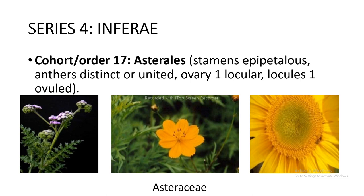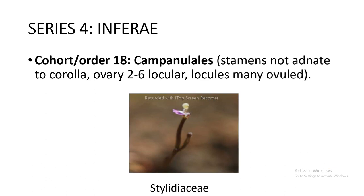Cohort and order 17 Asterales — stamens epipetalous, anthers distinct or united, ovary 1-locular with 1 ovule — includes Asteraceae as shown in the figure. Cohort and order 18 Campanulales — stamens not adnate to corolla, ovary 2–6 locular with many ovules — includes Campanulaceae as shown in the figure.